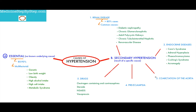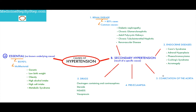Next, coarctation of the aorta can cause secondary hypertension. This is the congenital narrowing of the aorta distal to the left subclavian artery. It causes hypertension by decreasing renal perfusion.